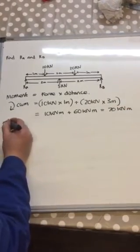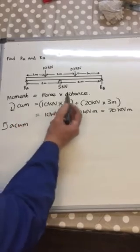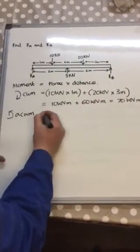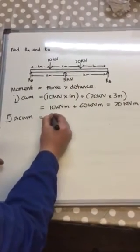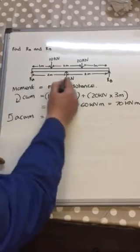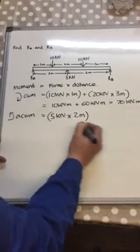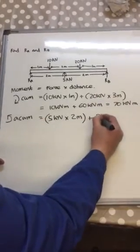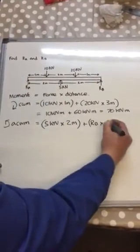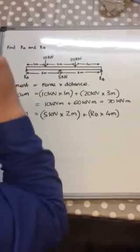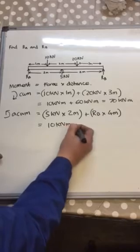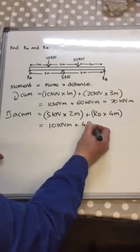Now if we take anti-clockwise moments, I'm going to have this external force and this reaction in plane. So the 5kN multiplied by 2 meters distance from the fulcrum plus Rb multiplied by the total distance which is 2 plus 2, which is 4 meters. This then simplifies to 10kN·m plus 4Rb.